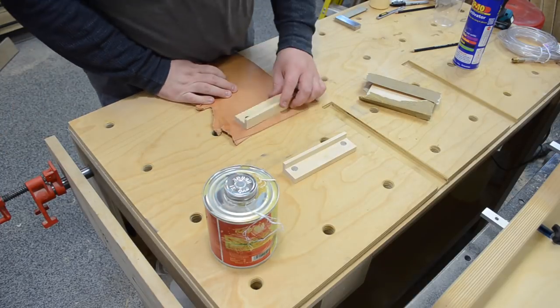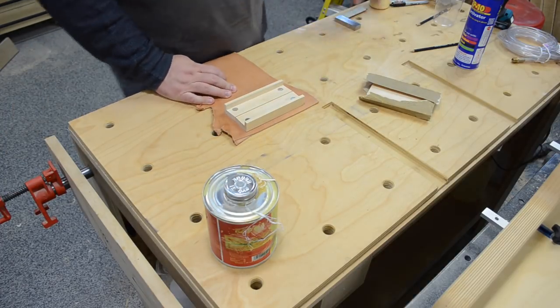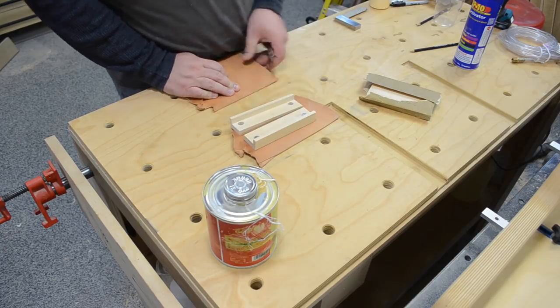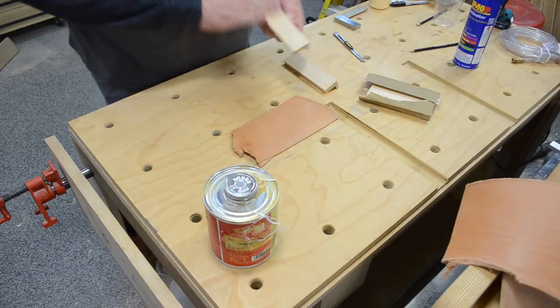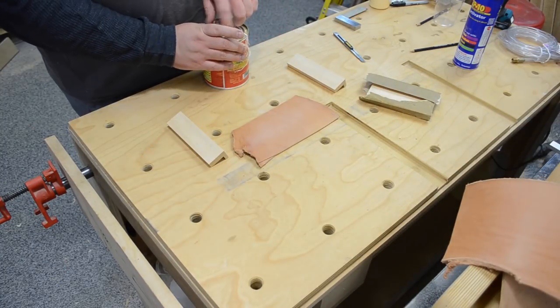Then I could get out some veg tan leather and cut approximately whatever I needed for a size and I ended up actually cutting it in half again just to make two separate pieces. I think that was just going to be a little bit easier when I went to apply them.